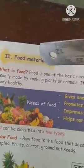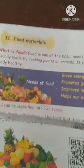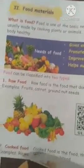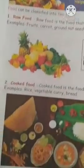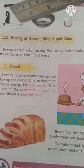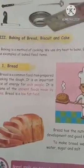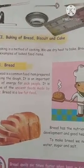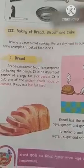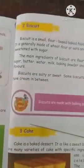Next: food materials. What are the food materials? Two types: raw food and cooked food. Next: cooking and methods of cooking, soft cooking. Third one: baking of bread, biscuit, and cake. We first studied bread, biscuit, and cake.